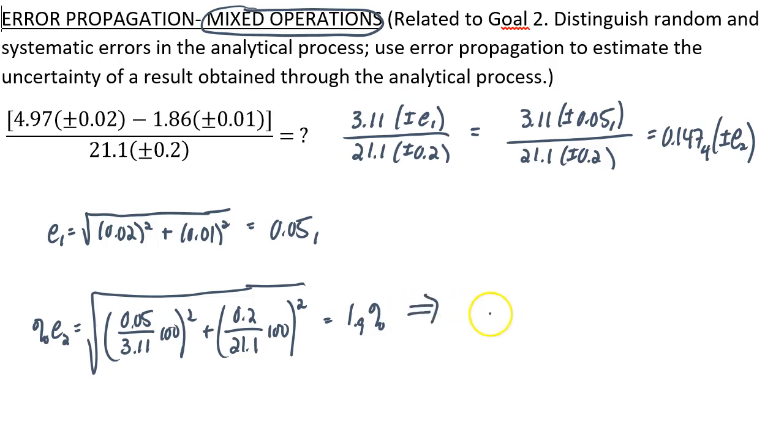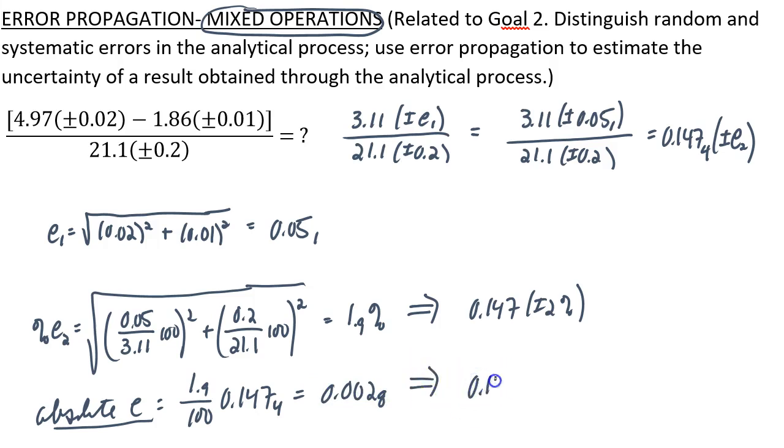So we could say that our result is 0.147 plus or minus 2 percent. And let's see if we can get the absolute from that. The absolute error would be 1.9 percent of that final result, 0.147 with an insignificant 4, which gives 0.002 with an insignificant 8. So we could also say 0.147 plus or minus